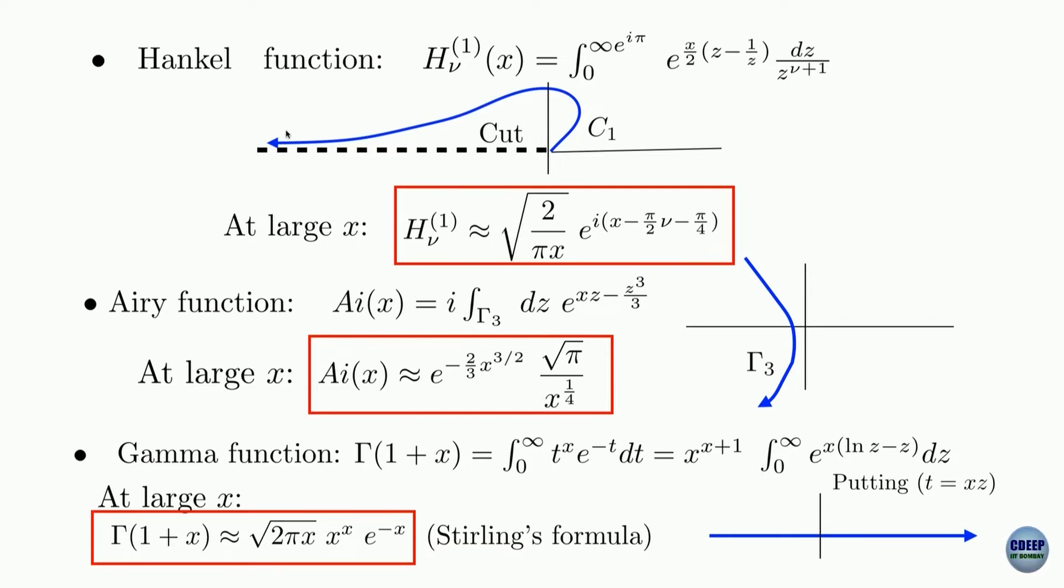In the complex plane, this is an integral going all the way from 0 to what I have written as infinity times e to the power of i pi. Infinity e to the i pi means the position goes to infinity and the angle theta goes to pi. This is from 0 to pi. So e to the i theta with r going to infinity and theta equal to pi.